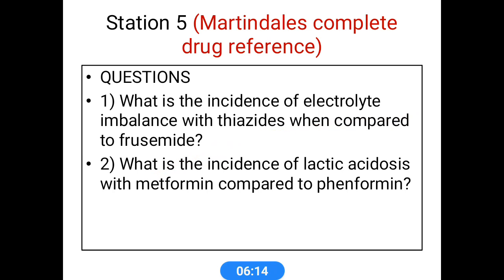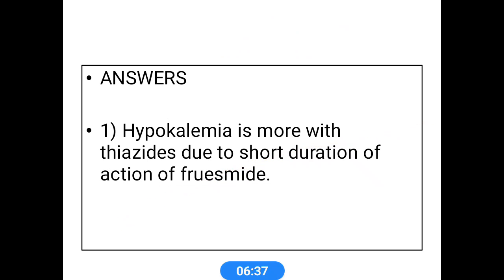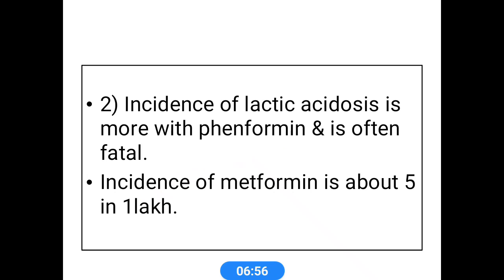Another important drug source is Martindale's Complete Drug Reference, which is a good source of drug information. Questions include: What is the incidence of electrolyte imbalance with thiazides compared to furosemide, and what is the incidence of lactic acidosis with metformin compared to fenformin? Both thiazides and furosemide are diuretics; furosemide is a loop diuretic. Hypokalemia is more common with thiazides compared to furosemide, due to furosemide's shorter duration of action. Regarding lactic acidosis, the incidence is more with fenformin and is often fatal, while the incidence with metformin is about 5 in 1 lakh.